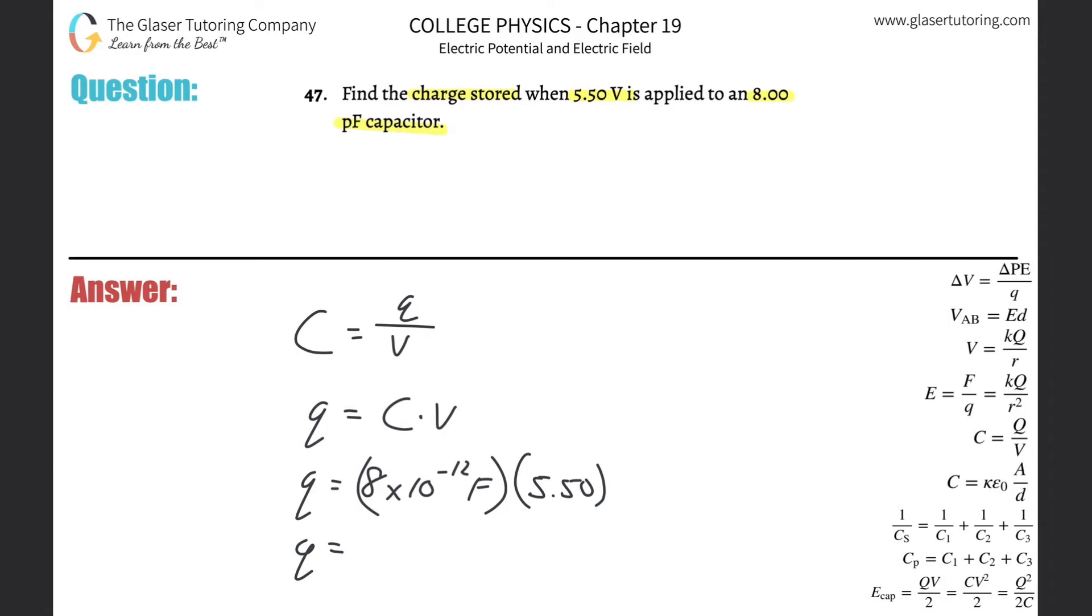So 8 times 10 to the minus 12th, multiplied by then 5.5. And we come up with a coulomb value of about 4.40 times 10 to the minus 11 coulombs. I guess I'll add the zero for sig figs. Whatevs.